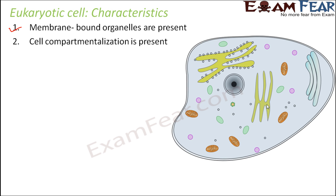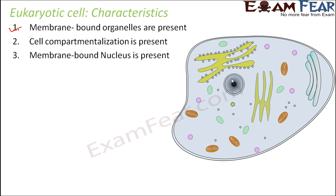Cell compartmentalization is present. The cell is divided into specific compartments — each compartment is nothing but an organelle, and each organelle performs a specific function. Membrane-bound nucleus is present. Here you can see this black-colored structure, which is nothing but the nucleus, surrounded by a membrane.